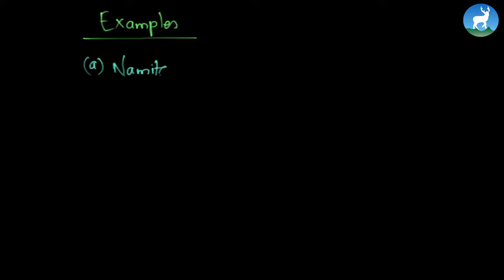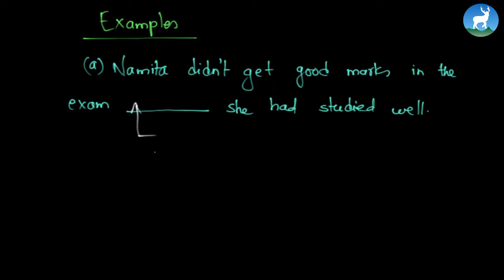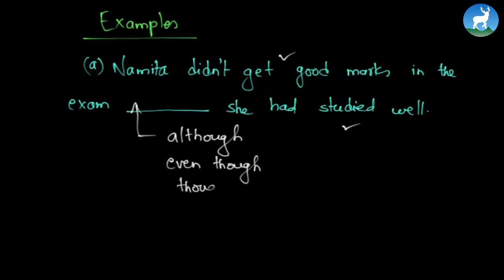Now let us look at some examples from the book. The first one is: Namita didn't get good marks in the exam, blank, she had studied well. What could be the possible answer? So there are two different ideas — Namita did not get good marks, and she had studied well. These ideas are contrasting, so which connective are we going to use — reason and purpose, or concession? We are going to use concession connectives. The answer could be: although she had studied well, or even though she had studied well, or simply though she had studied well.